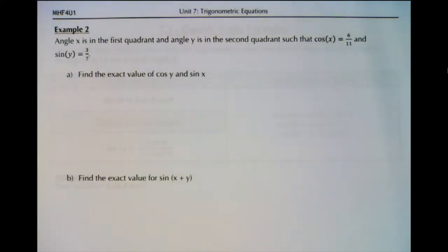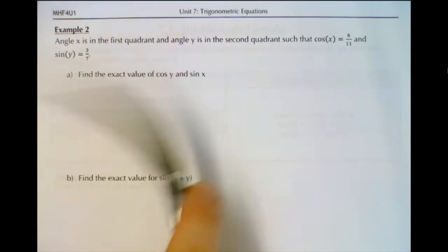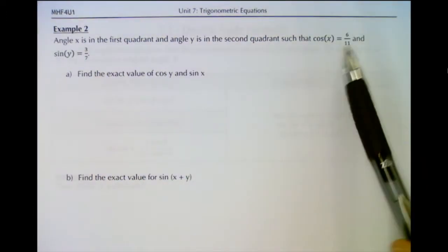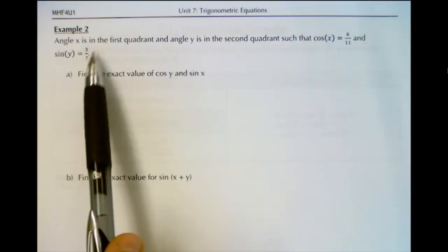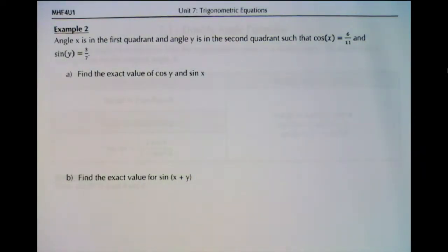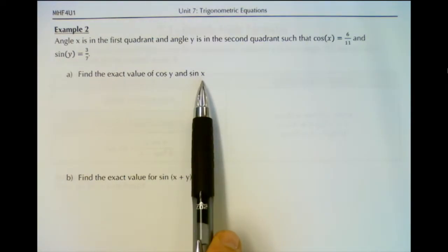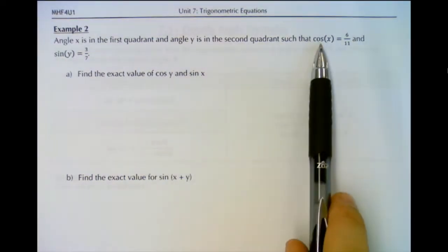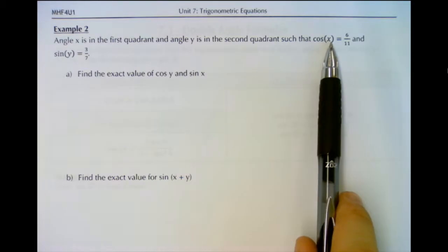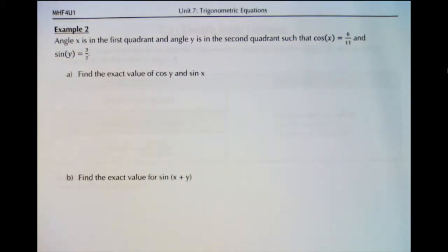This is part two of lesson 7.2 and we're going to do an example question with the addition or subtraction of sine and cosine. Angle x is in the first quadrant and angle y is in the second quadrant such that cosine of x is 6 over 11 and sine of y is 3 over 7. This is a two-part question: we want to find cos y and sine x. Eventually we're going to find the exact value of sine x plus y.